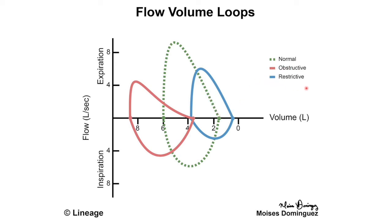In restrictive disease, the flow during both inspiration and expiration is much lower, so the curve is smaller. The curve also starts more to the right, meaning there is less volume in the lungs after forceful expiration — less residual volume — because of less overall lung expansion. The shape of the curve is quite similar to the normal curve; it is essentially a smaller replica shifted slightly to the right.